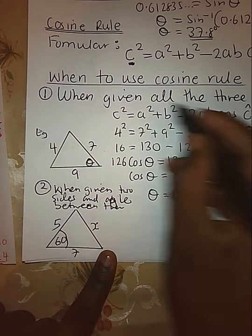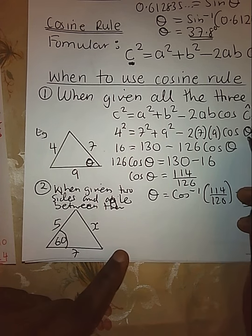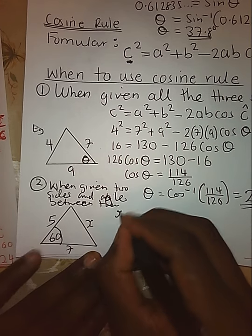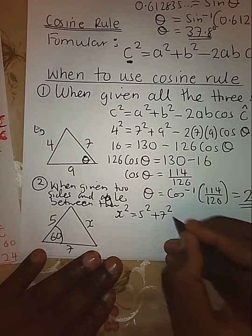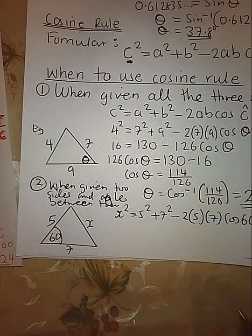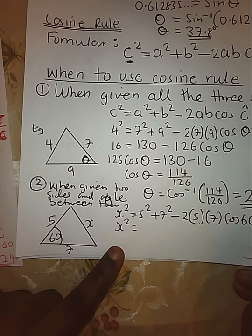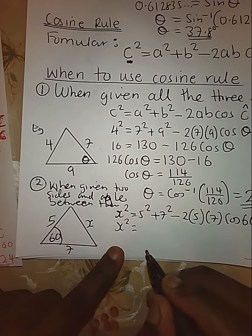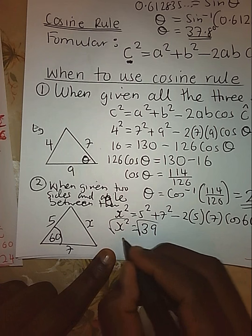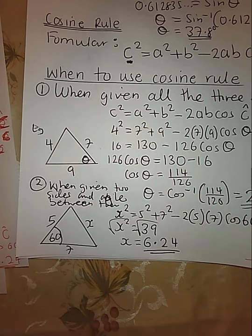I replace C with side x, replace the angle C with 60 degrees, and A and B with 5 and 7. So: x squared equals 5 squared plus 7 squared minus 2 times 5 times 7 times cos 60. Since we have all the values, we put them in the calculator and get 39. Taking the square root, x equals 6.24.